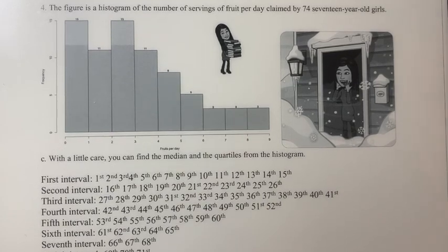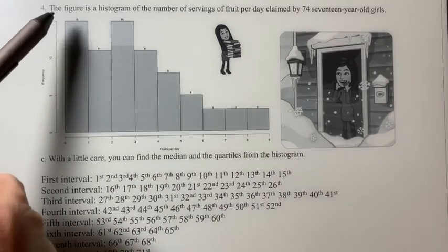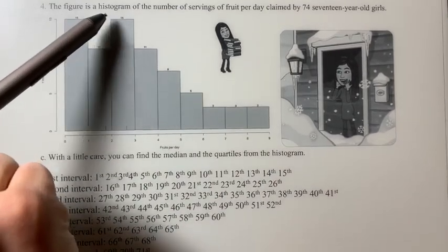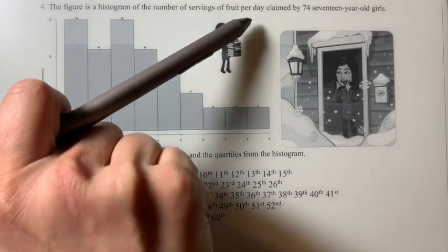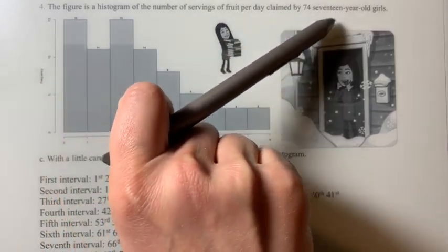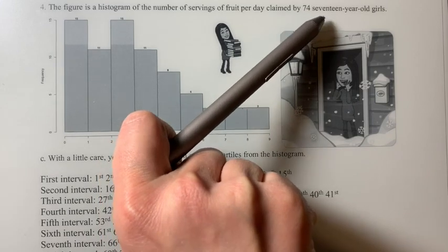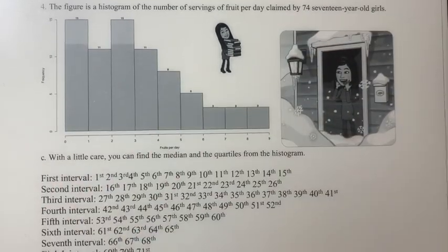You have two days off to study for my exam. Okay, so this question. It says the figure is a histogram of the number of servings of fruit per day claimed by 74 seventeen-year-old girls.